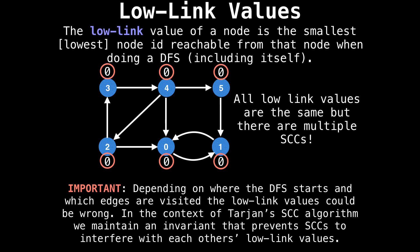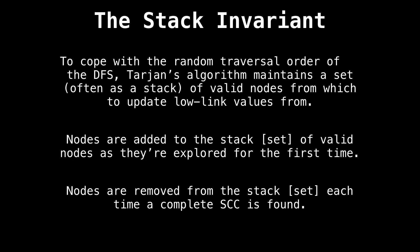This is where Tarjan's algorithm kicks in with its stack invariant to prevent strongly connected components from interfering with each other's low link values. To cope with the random traversal order of the depth first search, Tarjan's algorithm maintains a set — often implemented as a stack — of valid nodes from which to update low link values. Nodes are added to the stack as they are explored for the first time, and nodes are removed from the stack each time a strongly connected component is found.